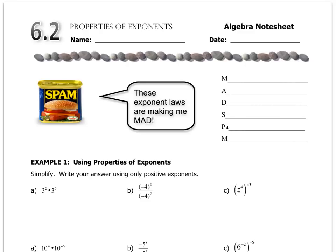This lesson deals with a lot of properties of exponents, and the way that I organize in my mind the different properties of exponents is by using this acronym MADSPAM, and MADSPAM stands for when you're multiplying exponents or values with exponents, you add the exponents.